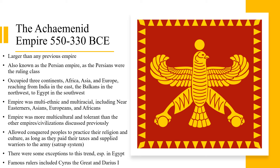The Achaemenid Empire reached the Balkans in Europe in the northwest and Egypt in the southwest. The Achaemenid Empire was multi-ethnic and multi-racial, including Near Easterners, Asians, Europeans, and Africans. The empire was also more multicultural and tolerant than other empires and civilizations that had been discussed previously.